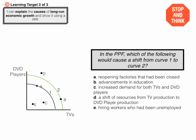Test yourself — pause the video and answer this question: which of the following would cause a shift from curve one to curve two, or which would be a cause of long-run economic growth? The answer is B — advancements in education. That improves the human resource; you're able to get more out of it than before.